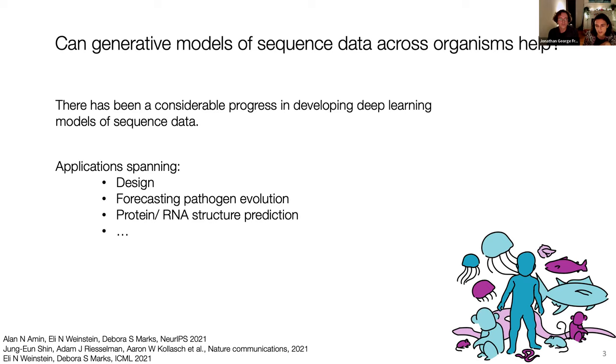with PolyPhen and SIFT, column conservation across evolution has always been a very used source of evidence. But recently, there's been a huge amount of progress in new deep learning models developed specifically for biological sequence data. These have been shown to be useful for lots of different applications: design, pathogen evolution, structure. And here I'm showing lots of work from our lab, but this is an effort from the wider community and has been shown to be paying off. So our question is, can this progress translate to the actual problem of clinical interpretation of human genetic variants?